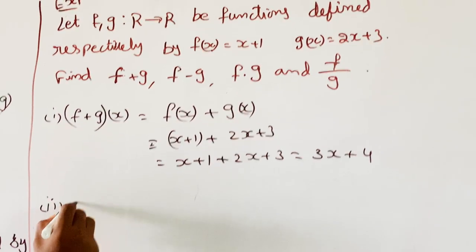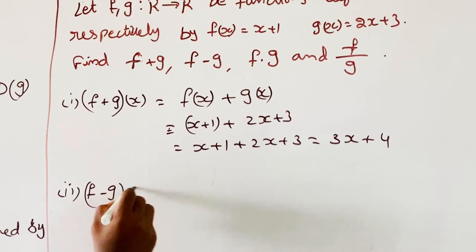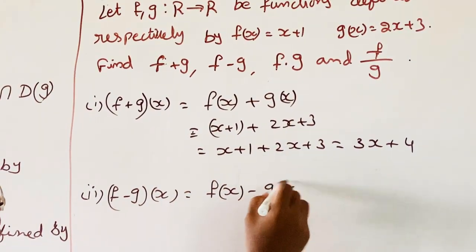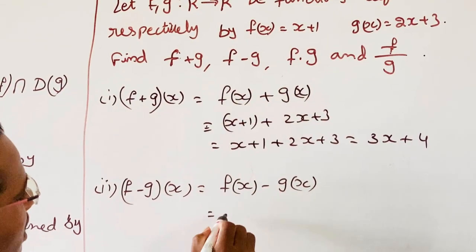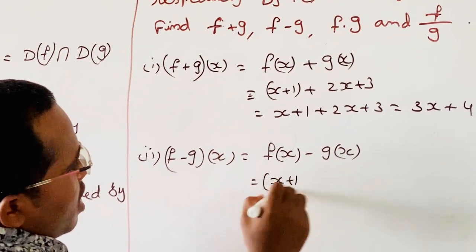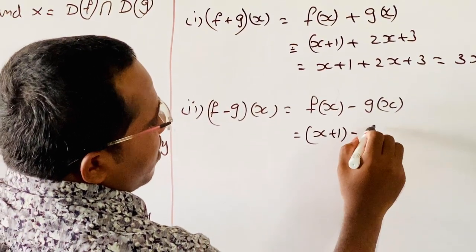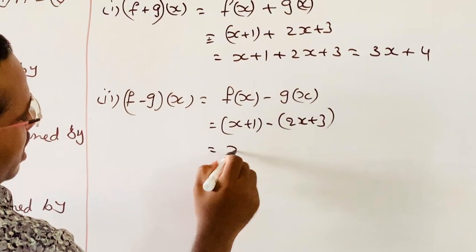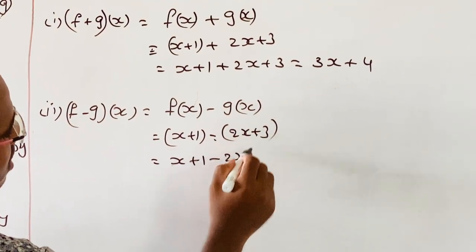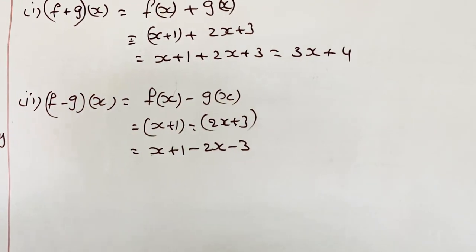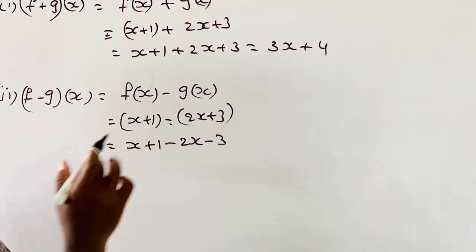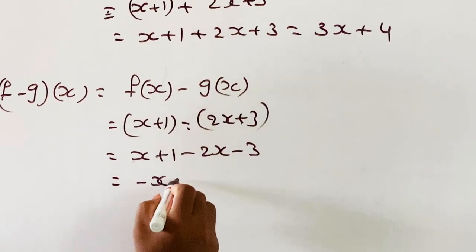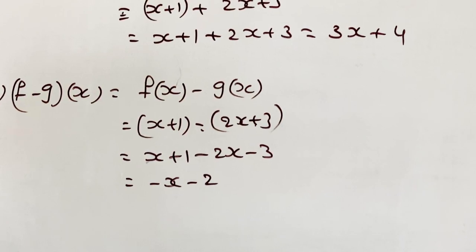Second, F minus G of X equals F of X minus G of X. F of X is X plus 1 minus G of X which is 2X plus 3. That equals X plus 1 minus 2X minus 3, giving minus X minus 2.